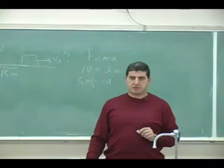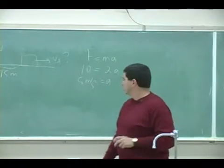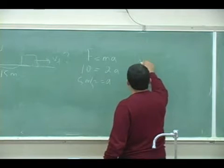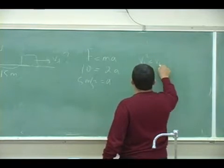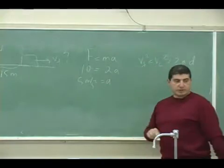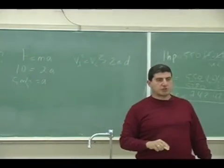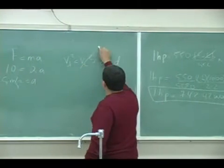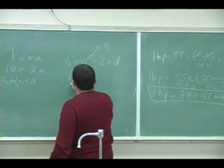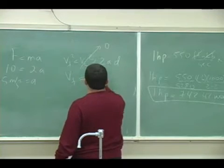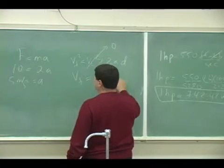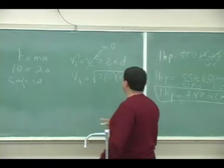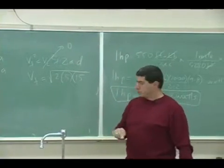So this one we could use the third equation, the v final squared is v initial squared, the one that doesn't have a t in it. So the initial would be 0, the final would be square root of 2 times 5 times 15.